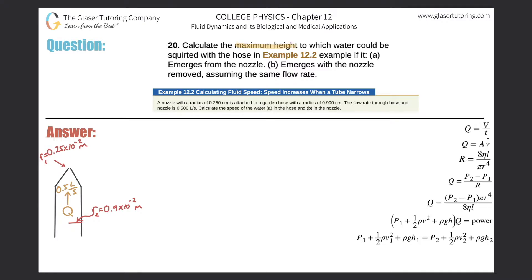Number 20: calculate the maximum height to which water could be squirted with the hose in example 12.2 if it emerges from the nozzle. The nozzle has a radius of 0.25 × 10⁻² meters and the hose has a radius of 0.9 × 10⁻² meters. The volume flow rate through the hose with the nozzle attached is 0.5 liters per second.